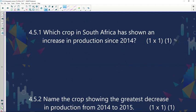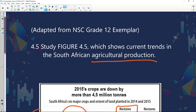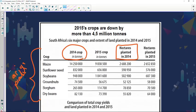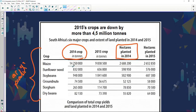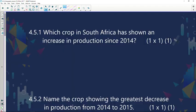Now if you look at it, which crop in South Africa has shown an increase in production since 2014? So let's go and have a look quickly. Where was an increase? The maize has actually dropped. The sunflower has dropped almost by 200,000. The soybeans, there's 948,000 tons and over a million tons. There you go, soybeans has actually increased. So the correct answer is soybeans.